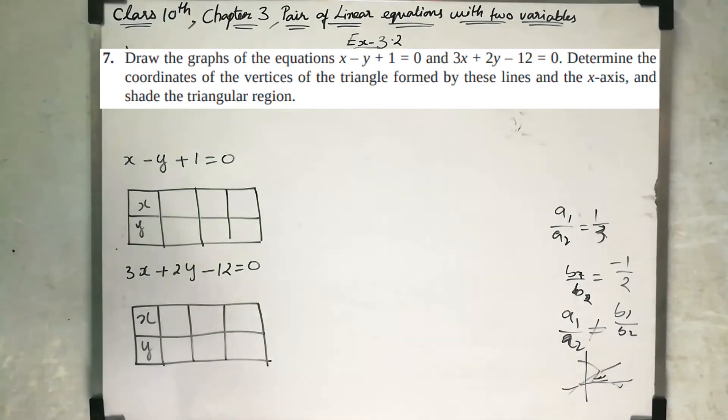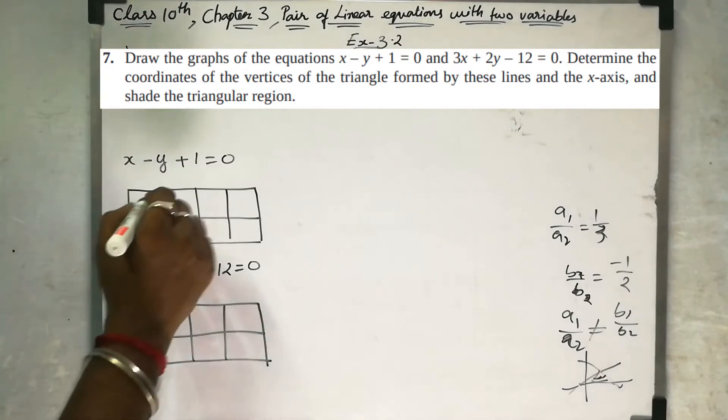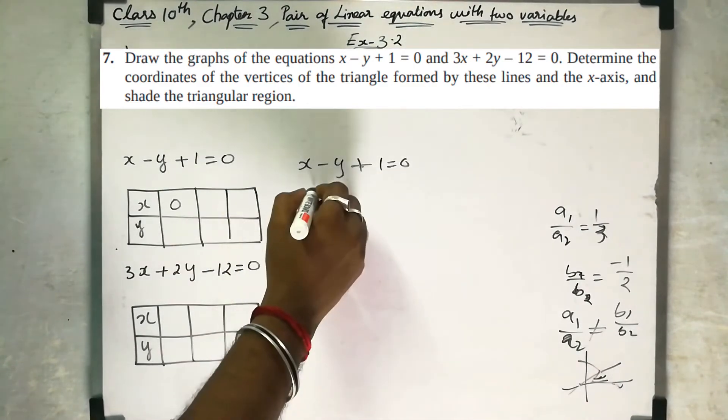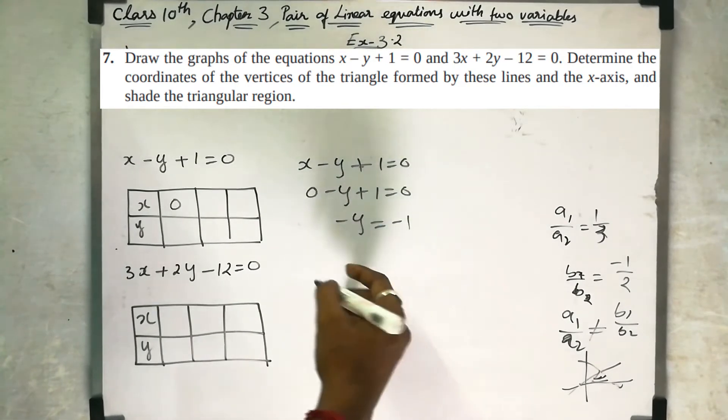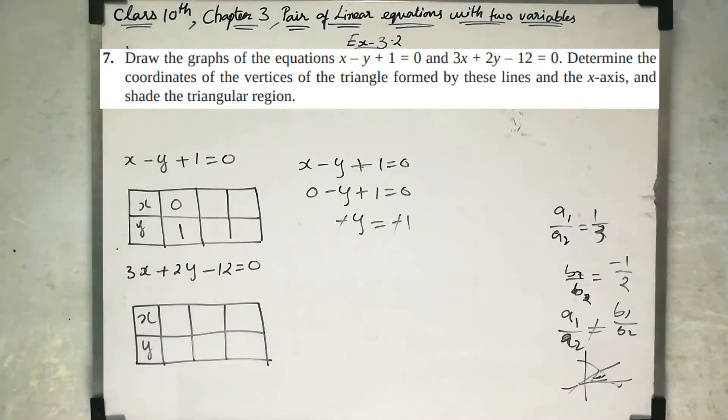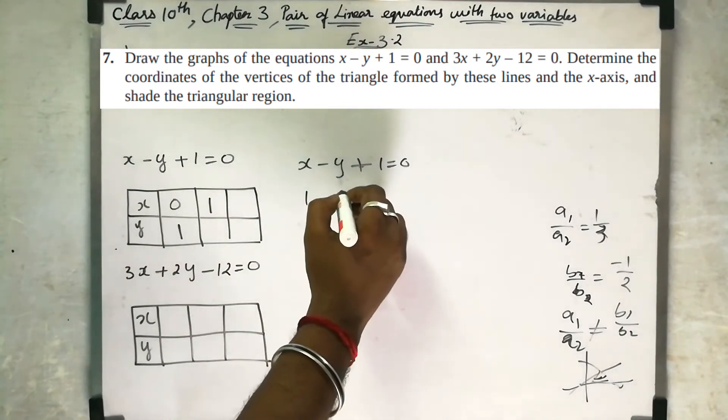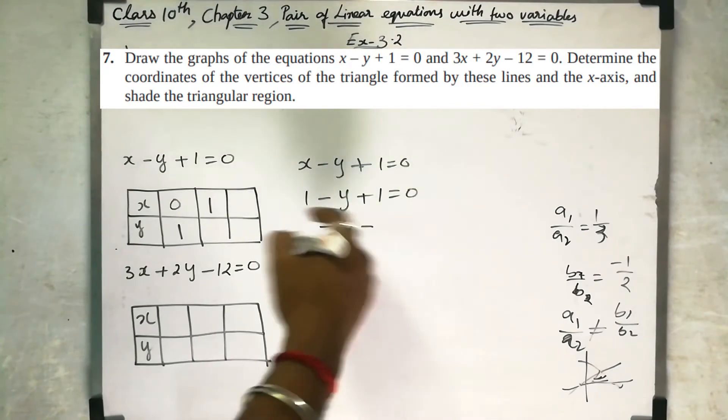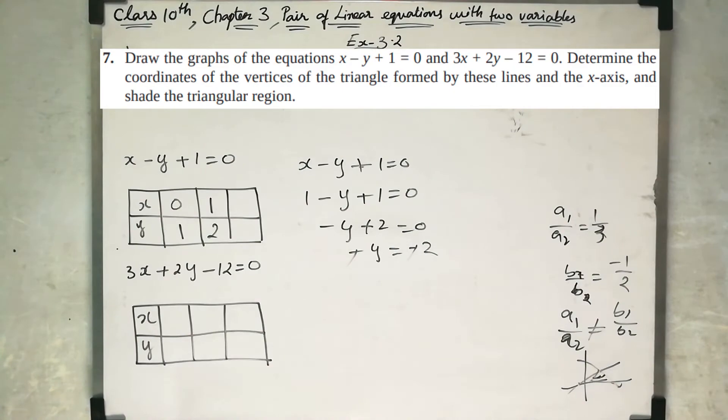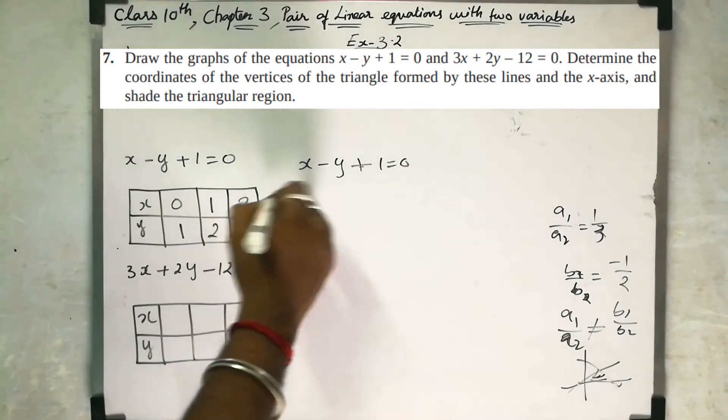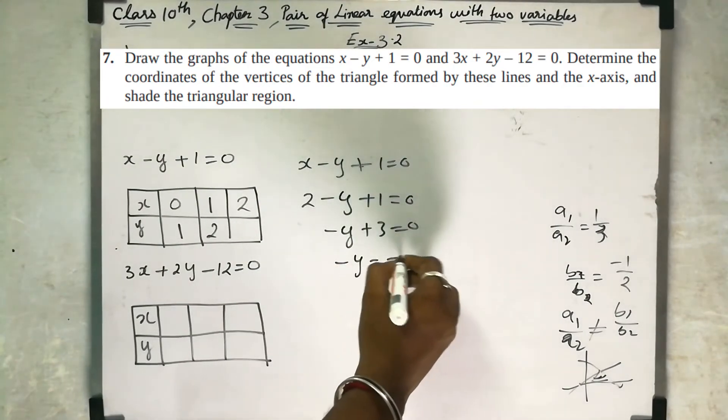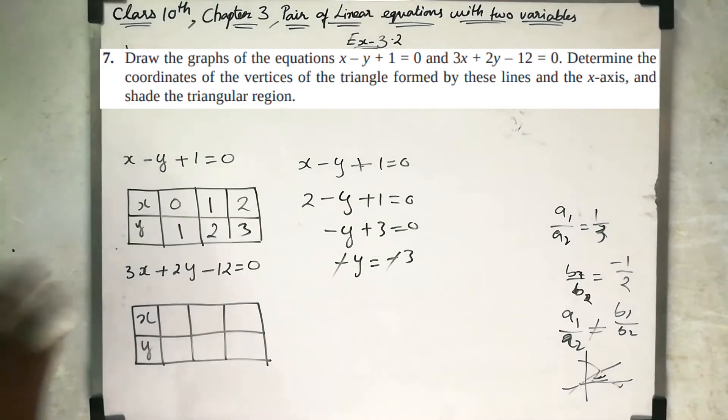Now for the first equation, substitute x is 0, then x minus y plus 1 equal to 0, so minus y plus 1 equal to 0, minus y equal to minus 1, y is 1. Then x is 2: 2 minus y plus 1 equal to 0, minus y plus 3 equal to 0, minus y equal to minus 3, so y equal to 3 for the first equation.